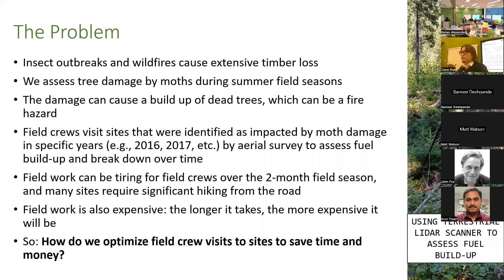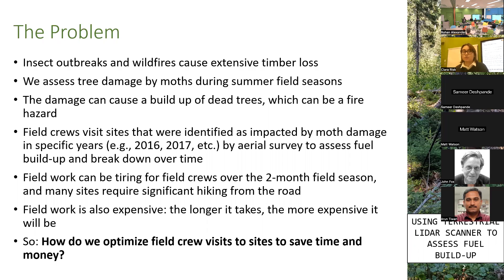What we do is go into different field sites in northwestern Ontario across the province and assess the amount of dead trees and branches that have built up at different sites, so we know where we have a problem. Tree damage is assessed by aerial survey, but we do have to go in person and look at how much dead wood is on the ground — you can't see that from aerial survey. Field crews from our lab visit sites identified on this aerial survey as being impacted in specific years to assess fuel buildup and breakdown over time, so we know where there is a risk of forest fire.